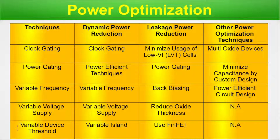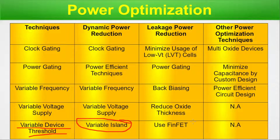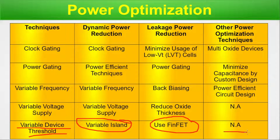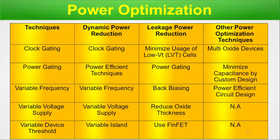For variable device threshold (varying VT of the MOSFETs): dynamic power reduction uses variable island, and for leakage power reduction we use FinFET, bulk CMOS, or SOI CMOS — with FinFET providing substantially low leakage. For other power optimization it is not applicable (NA). This completes the power optimization comparison. For details, see the low power episode linked in the description.